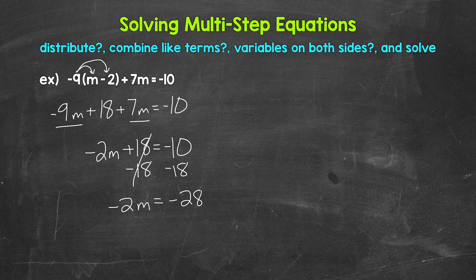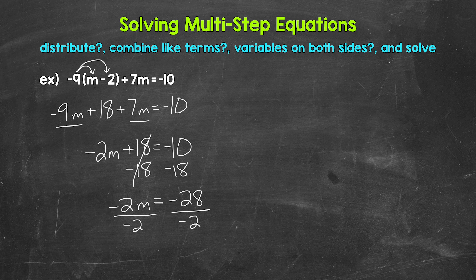That gives us negative 28, so now we have negative two m equals negative 28. Negative two times m equals negative 28, so we need to undo that multiplication. The inverse operation of multiplication is division. So we divide both sides by negative two — on the left side, multiplying by negative two and dividing by negative two cancel each other out.